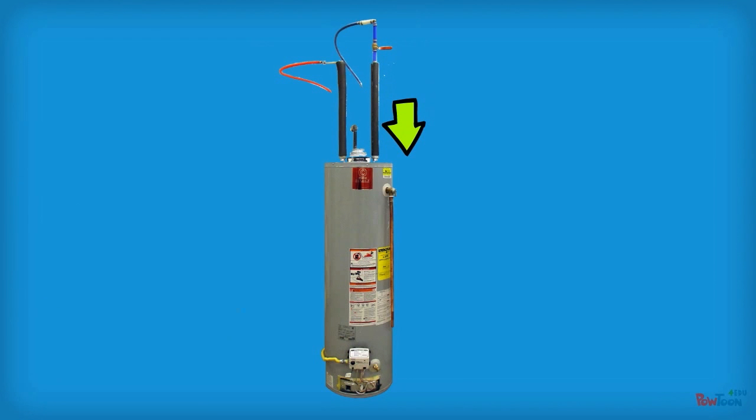So the cold water inlet brings our cold water in. The tank stores that water, and while it's being stored, it's being heated. And when it gets to a certain temperature, it's distributed out through the hot water side. So that's our serviceable hot and cold water.